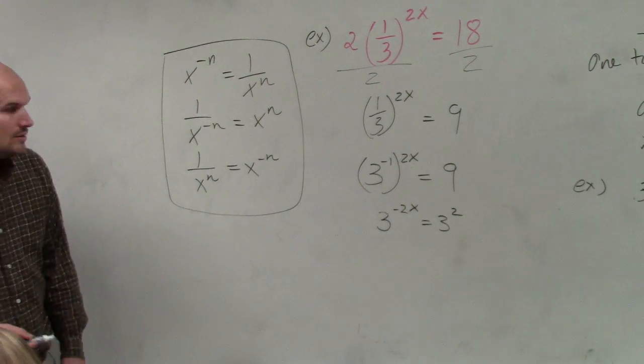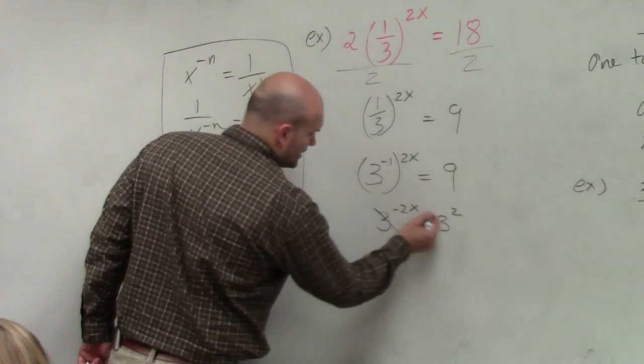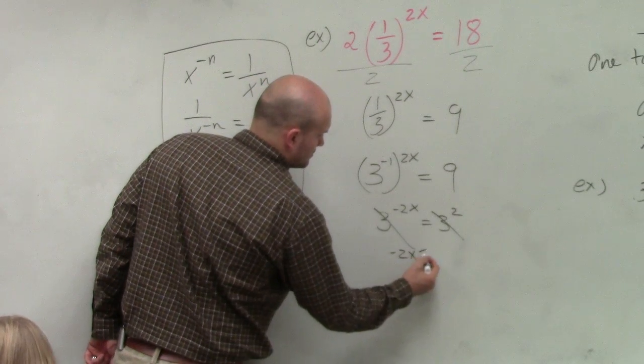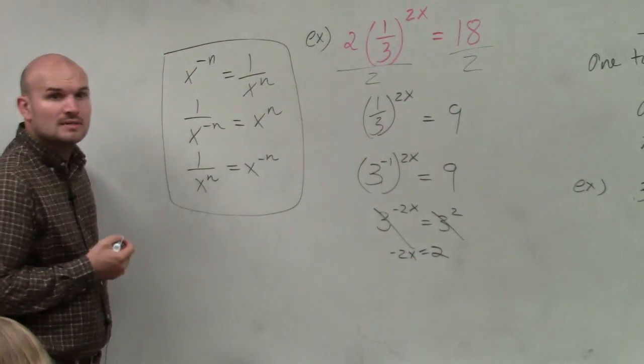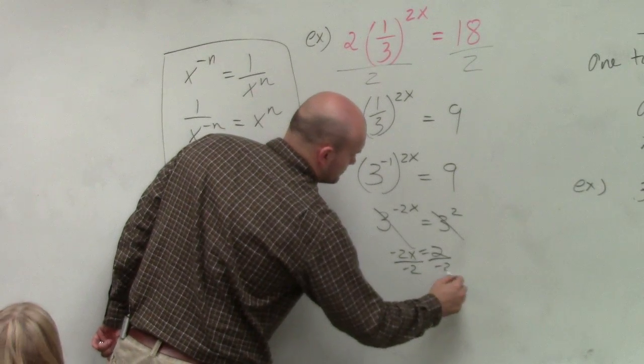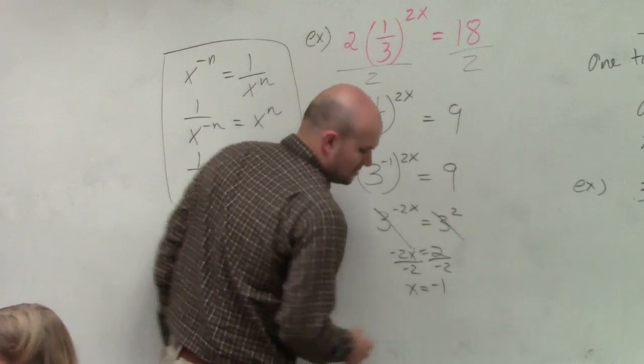Now I have 3 to the negative 2x equals 3 squared. Therefore, then I divide by negative 2. x equals negative 1.